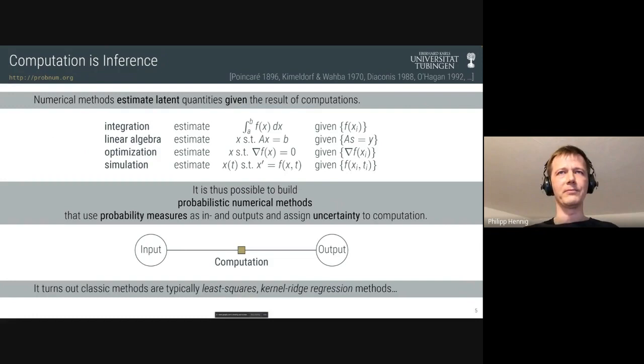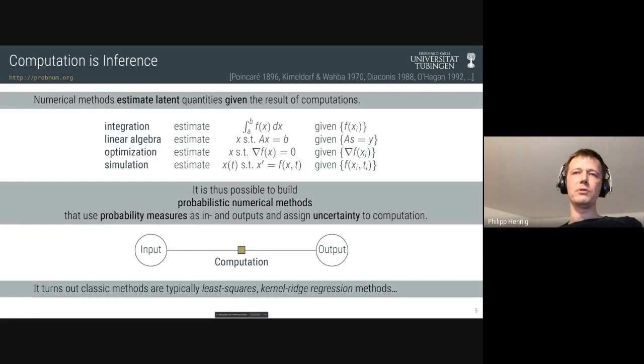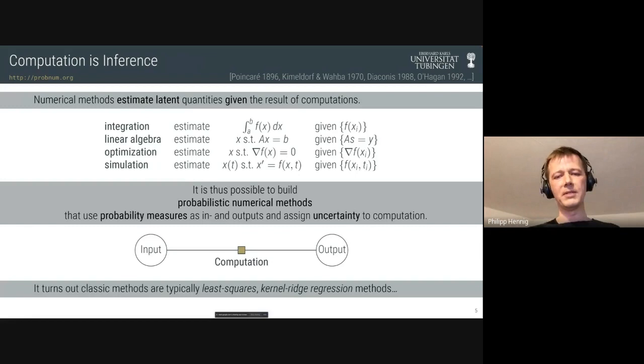This means we should be able to build numerical algorithms that treat computation as actively collecting information about an unknown quantity, and phrase these algorithms in a probabilistic language. I call these probabilistic numerical algorithms. There's an interesting connection: many classic numerical algorithms can actually be thought of as least-squares estimators — in the nonparametric sense, kernel ridge regression algorithms. Numerical analysis won't call them kernel ridge regression, but they basically are.